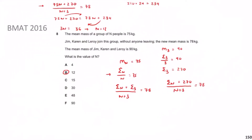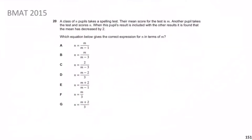Previously we worked on means — working out modified means and using them to find unknowns. That concept appeared in the previous question too. Now we move on to BMAT 2015: a class of n people take a spelling test and their mean score is m. Another person takes the test and scores n. When this person's result is included, the mean decreases by 2. Which expression below gives the correct value for n in terms of m?